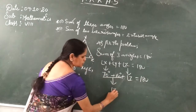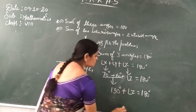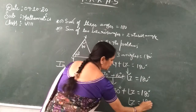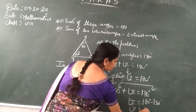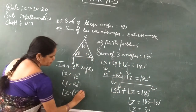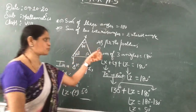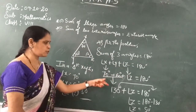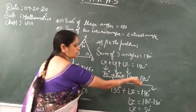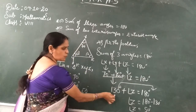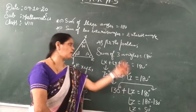So 70 plus 60 is 130 degrees. Plus angle z is equal to 180 degrees. So angle z is equal to 180 degrees minus 130 degrees. Therefore z is equal to 50 degrees. So here you write 50 degrees. I know you all understood this. So 70 plus 60 is 130, 130 plus z equals 180, so z equals 180 minus 130, z is equal to 50. The value of z is 50 degrees.